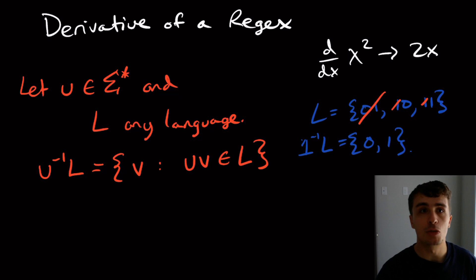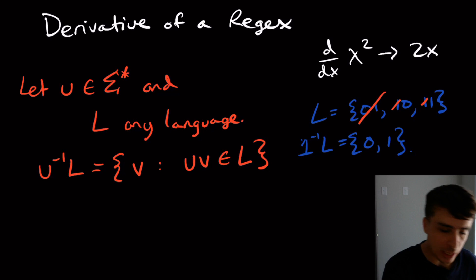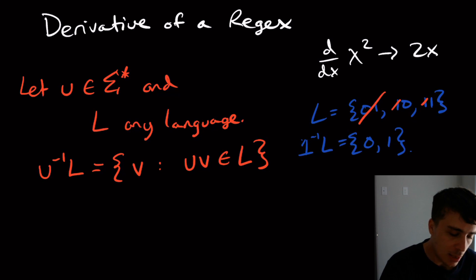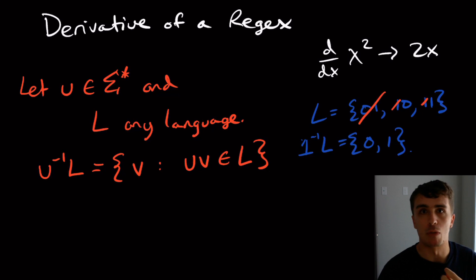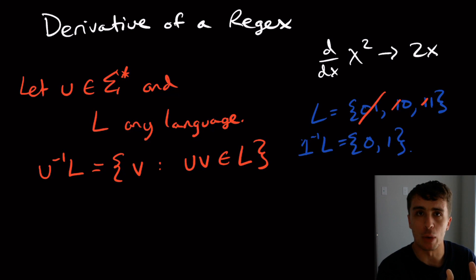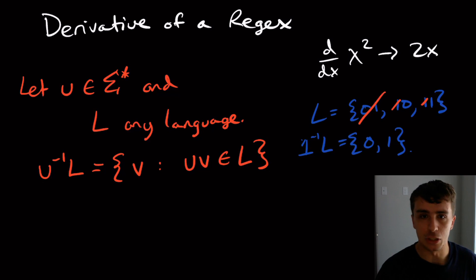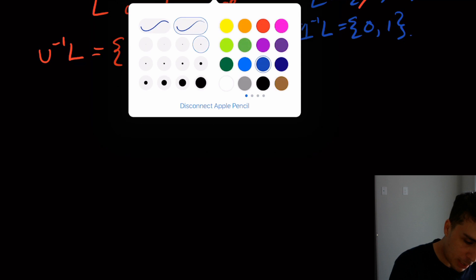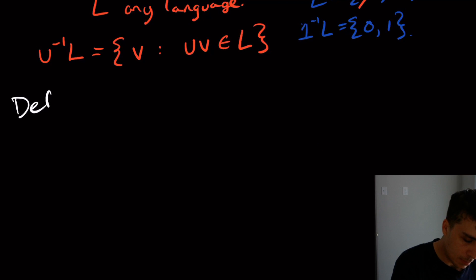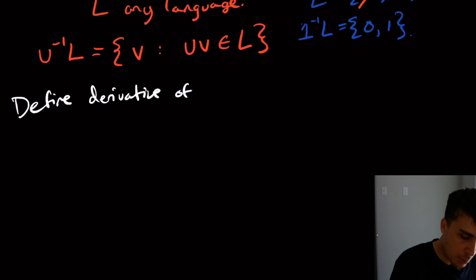So that's what a derivative of a regex is — basically the same thing, but we're defining it on the language while writing it in terms of a regex. The reason why we want to do this with a regex is that you can actually see what's going on with the strings that you're taking the derivative of. It's just a lot easier that way. So let's actually look at how we define a derivative of a regex.